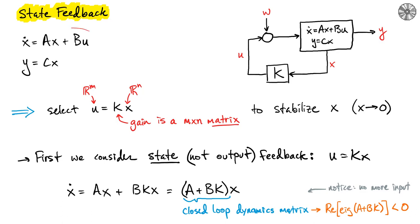So remember our state space equations are given up here: x dot equals Ax plus Bu and our observation y, what we actually see, is C times our state x.